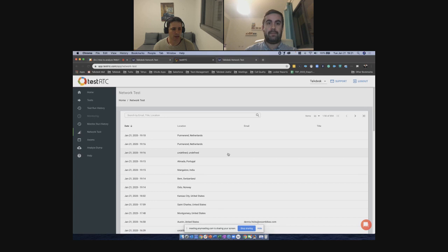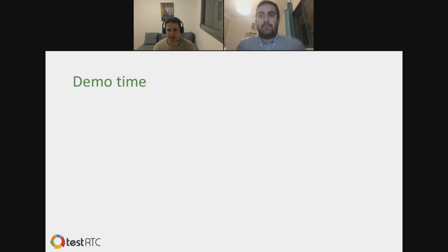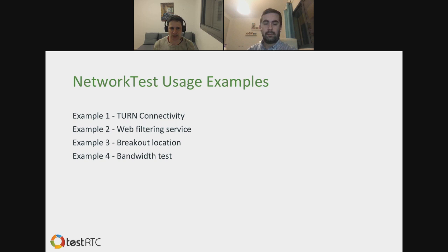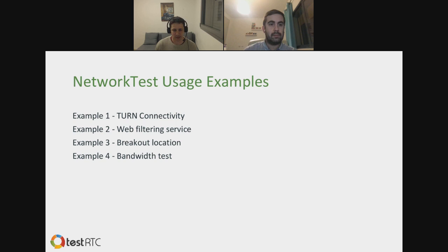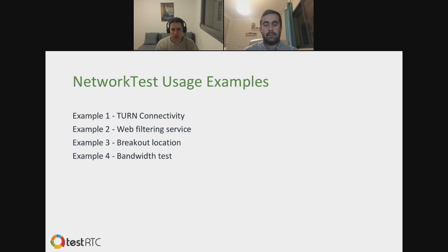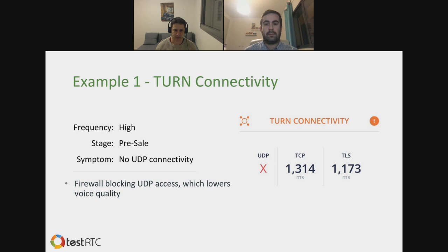Let me stop sharing and I'll continue the presentation. I've asked João not just to show the tool, but to share a few real-life examples of things that happened to them, why they matter, and what they do afterward. He came up with four examples. Bandwidth test was easy for me, and TURN connectivity was obvious, but I didn't know the other two — and for the ones I did know, I didn't know the exact timing in which they worked well.